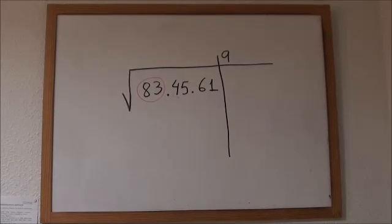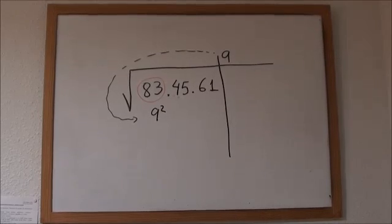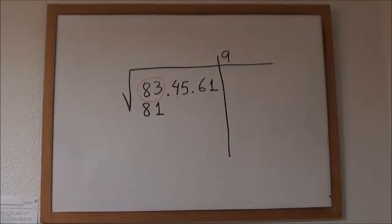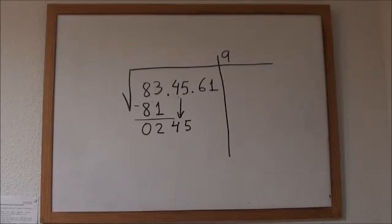So we write 9 on the upper right corner. And 9 squared, which is 81, under 83. And we subtract, which is 2. Now we bring down the next two digits, that is 45. And we double the number 9 and write it here, that is 18.